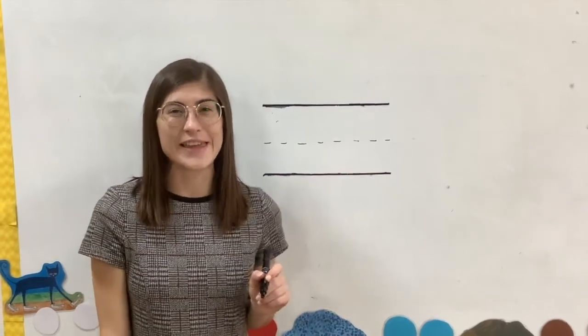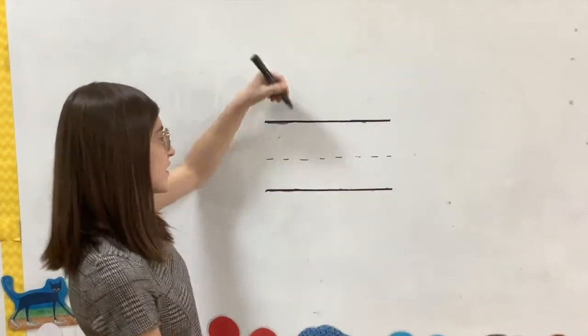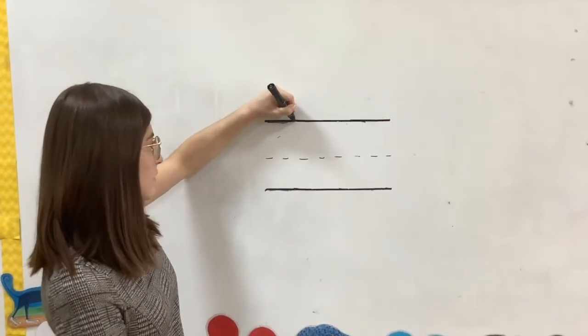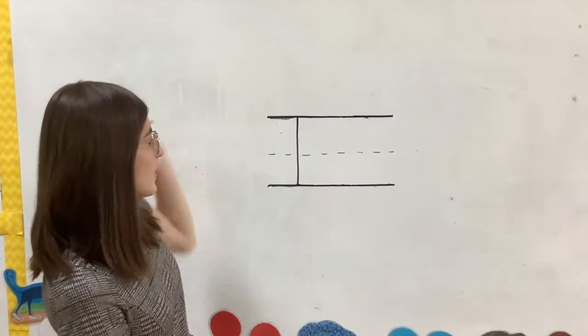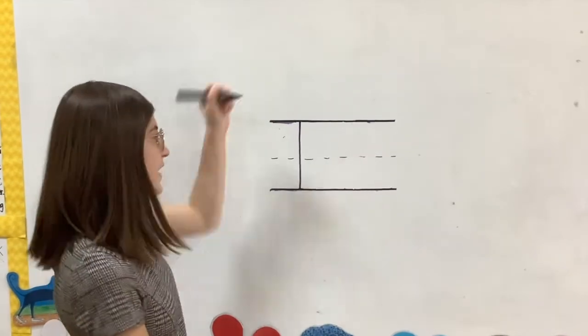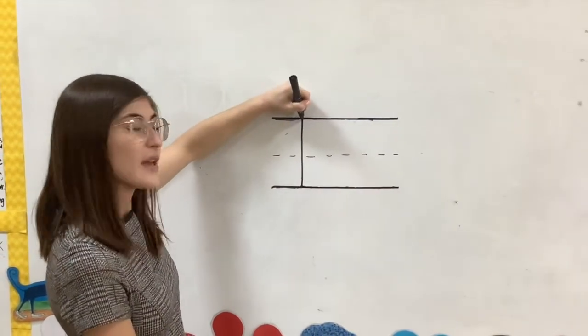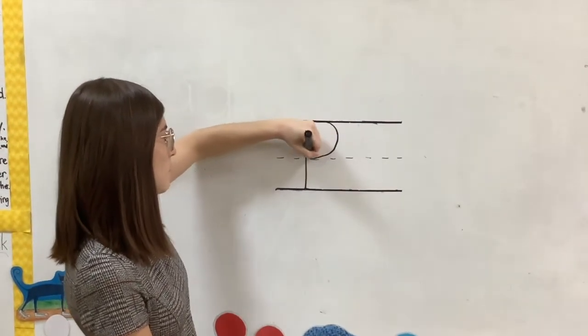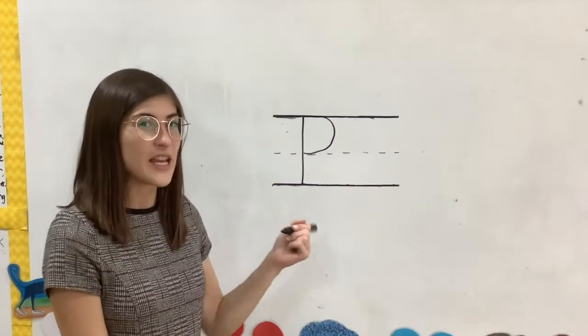Let's write uppercase P. Uppercase P starts at the top and we make a straight line down to the bottom like this. And we pick up our pens and we make a bump in the top half of our lines. We make a big bump like this. That's uppercase P.